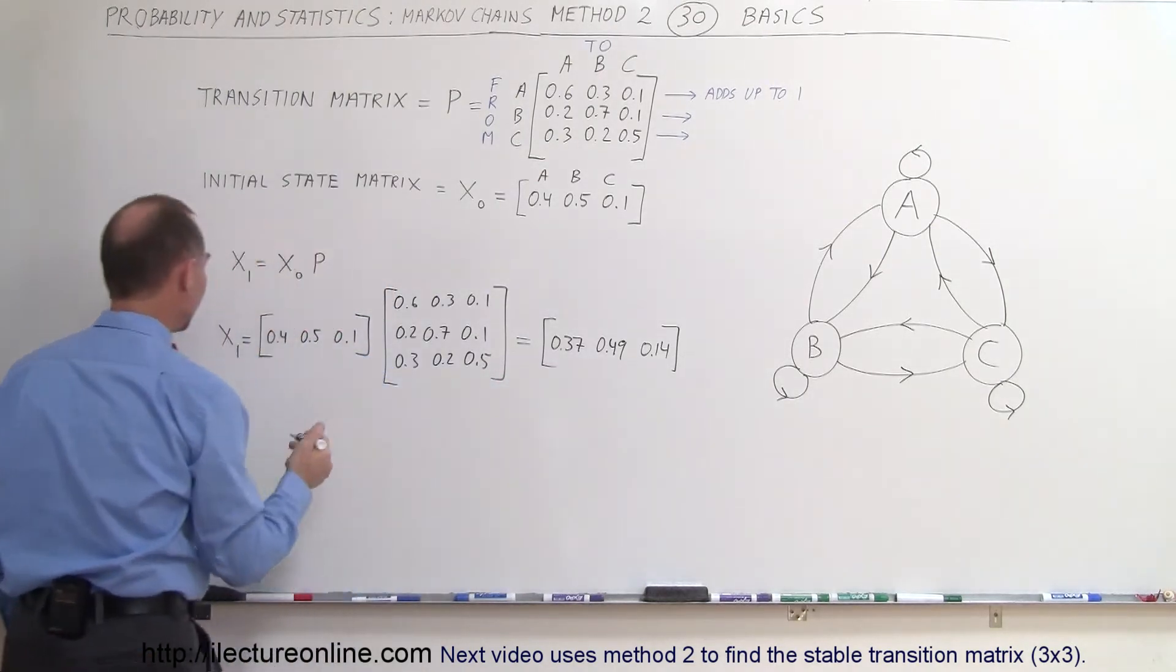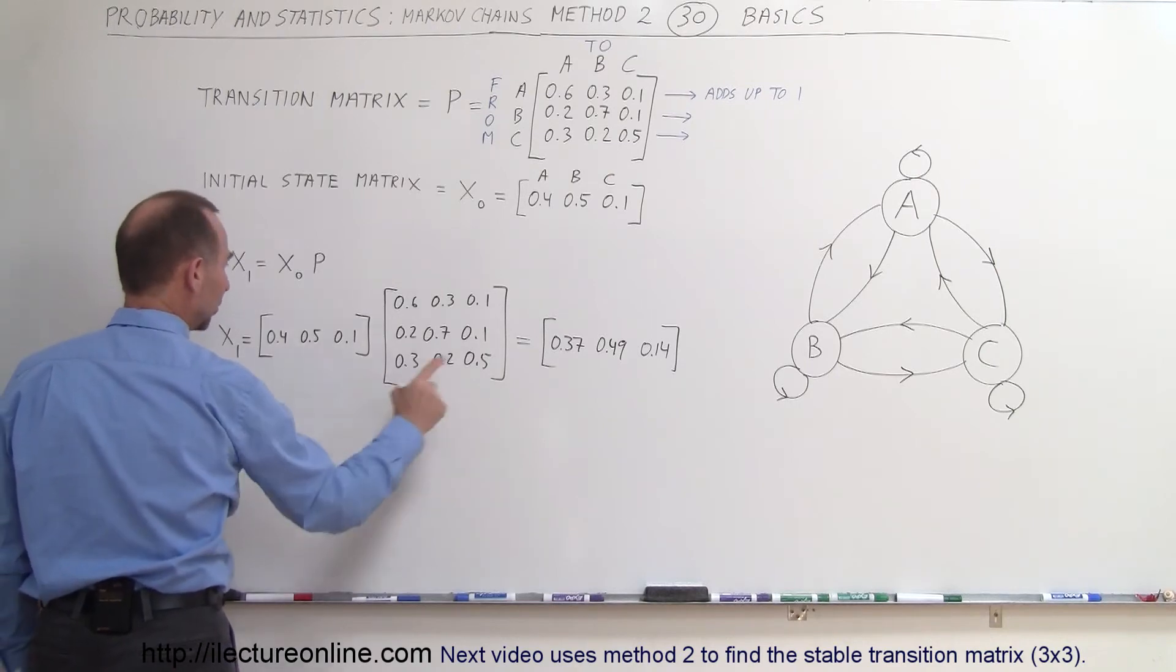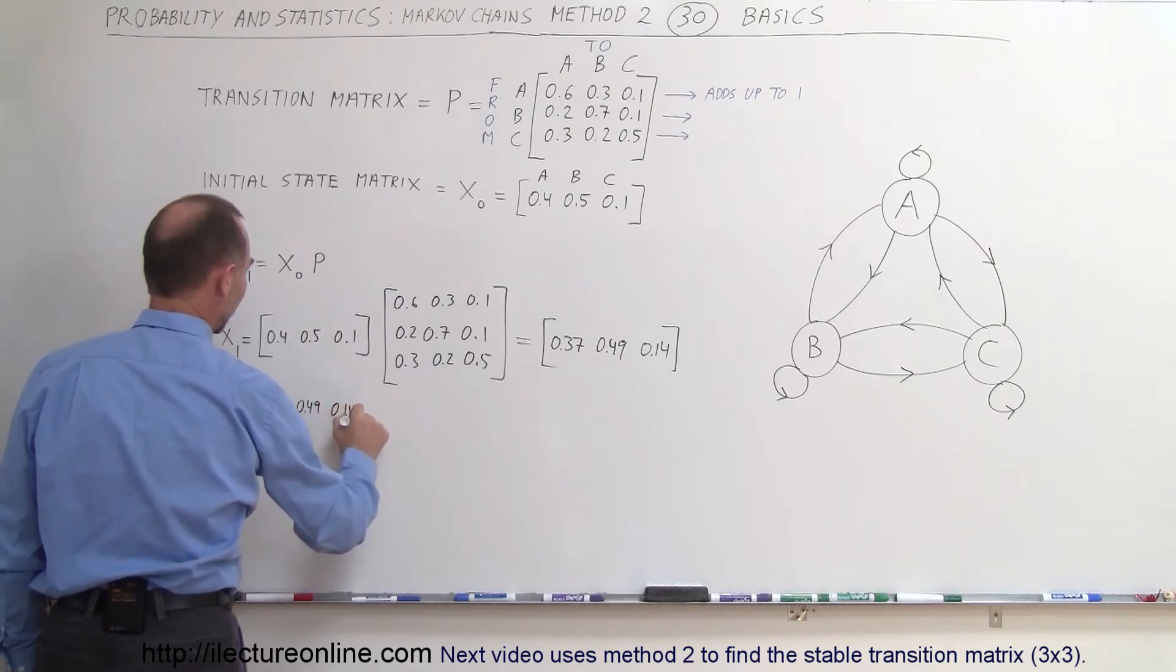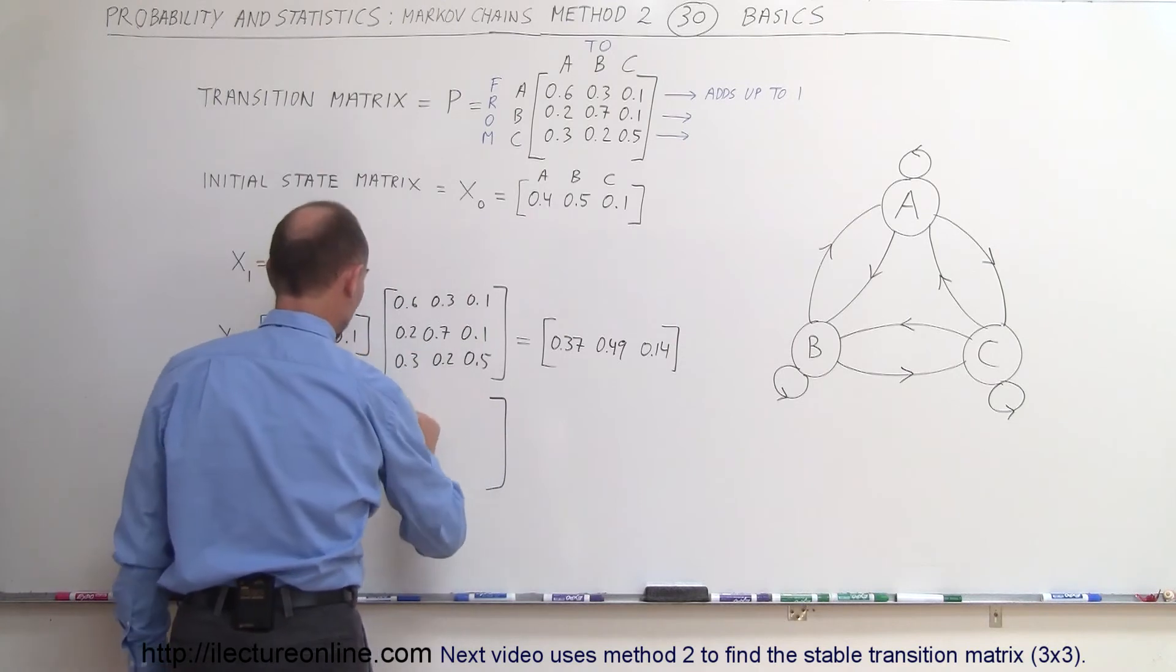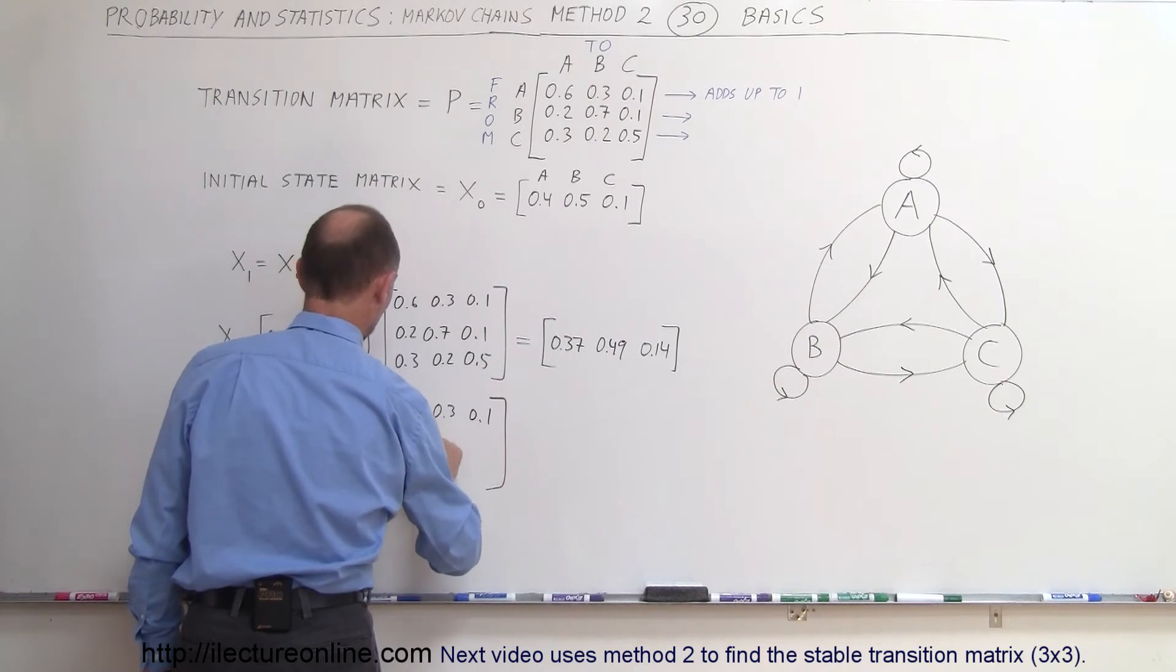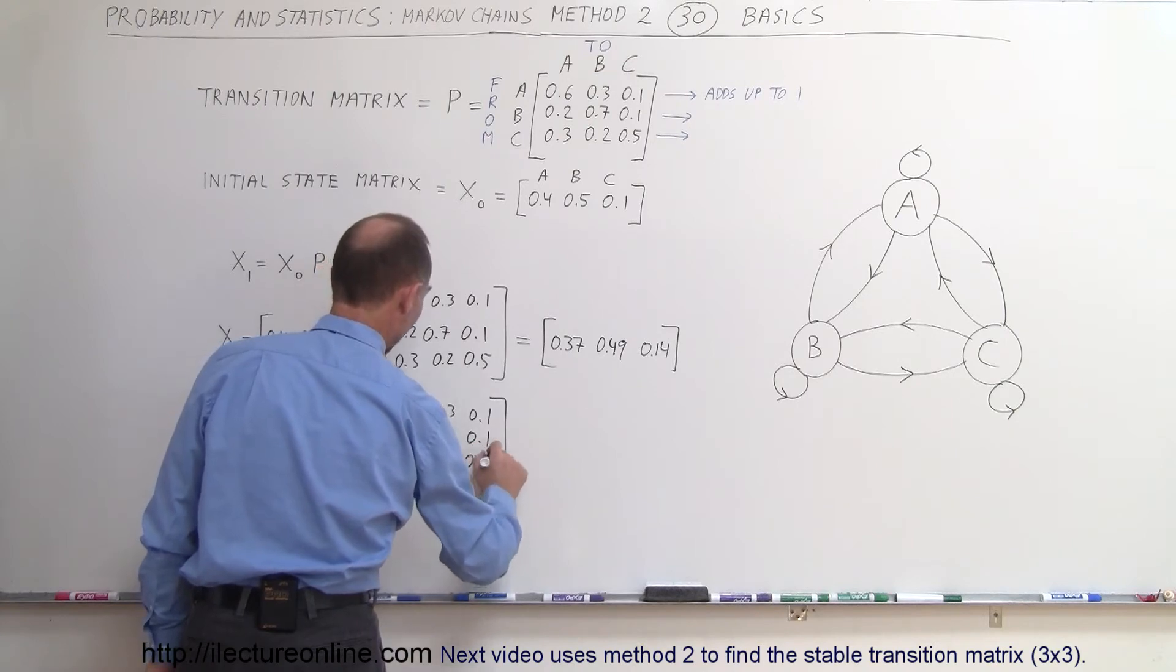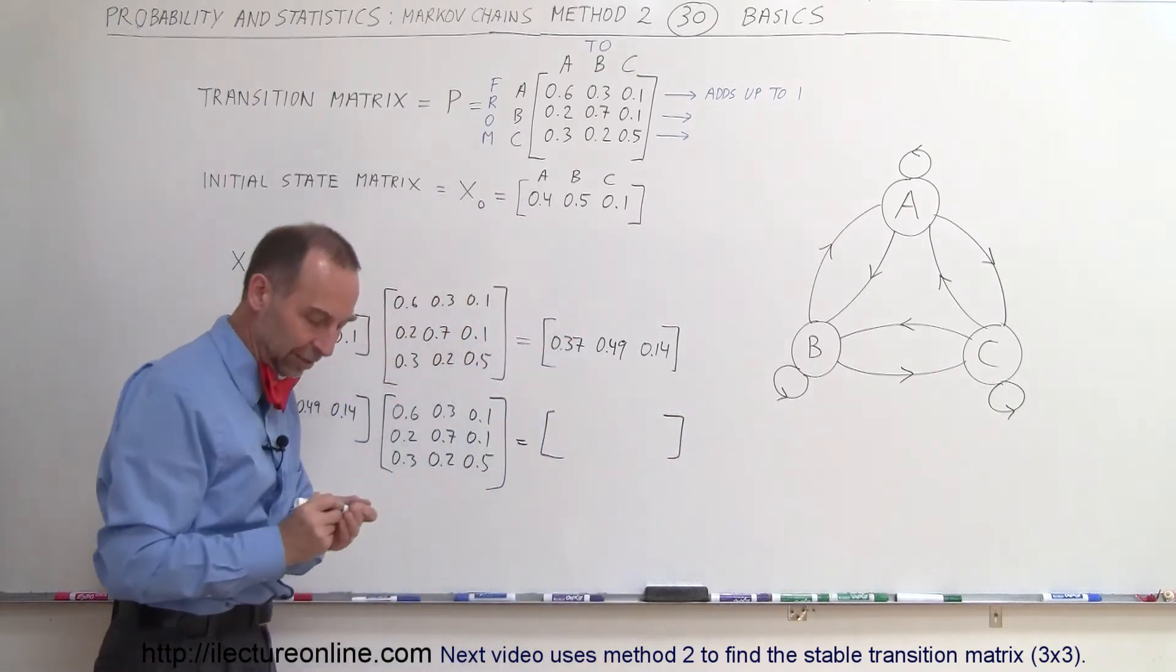If I want to find state 2 x sub 2 I multiply state 1 which is 0.37 0.49 0.49 and 0.14 and I multiply that times the transition matrix and that transition matrix is 0.6 0.3 0.1 0.2 0.7 0.1 0.3 0.2 0.2 0.5 and then we end up with the second state matrix right there.